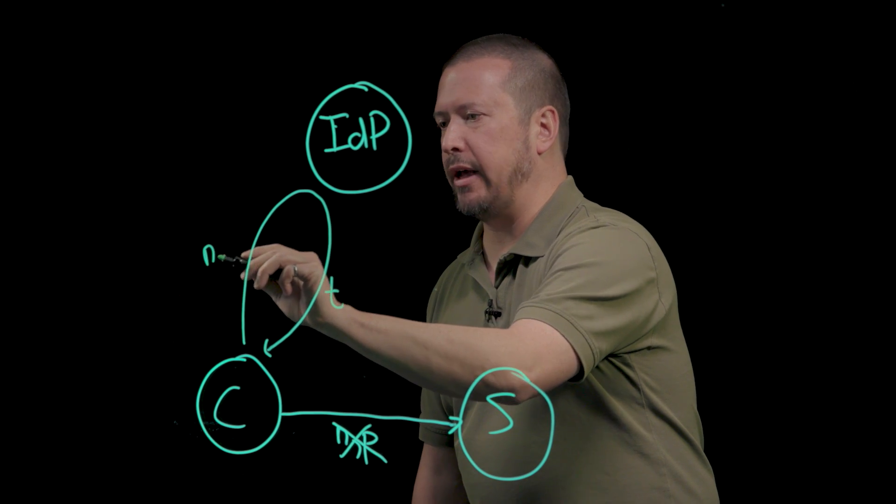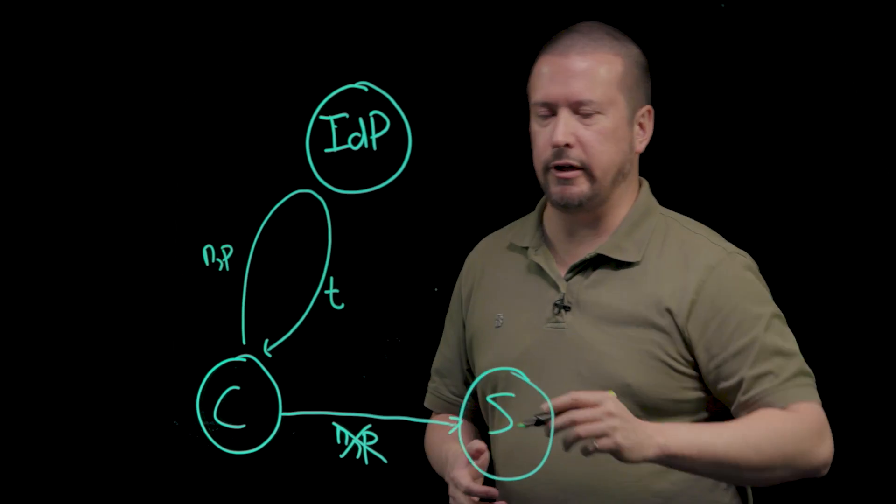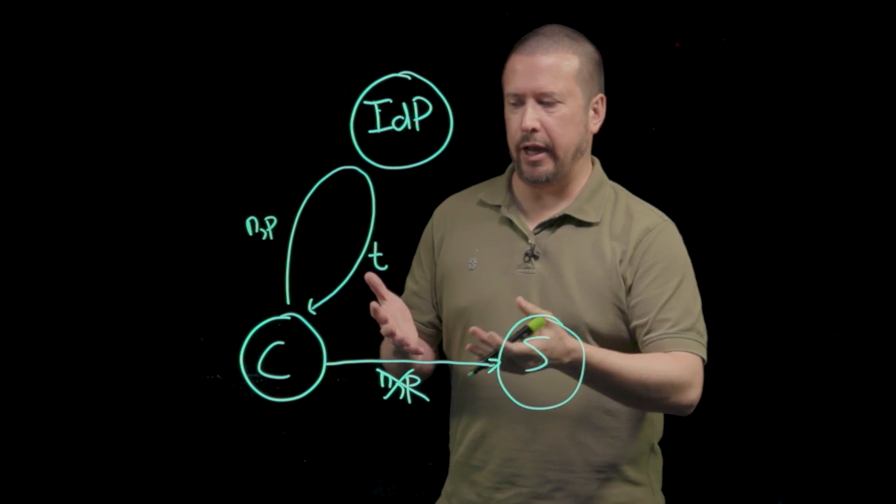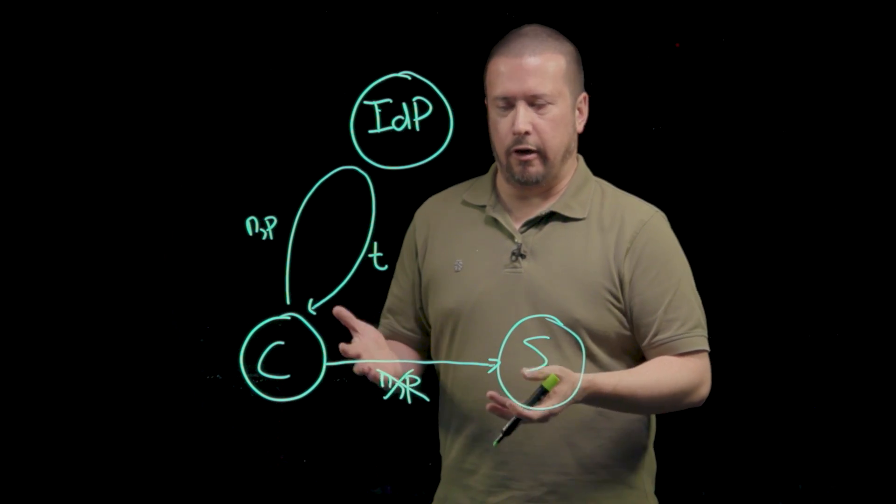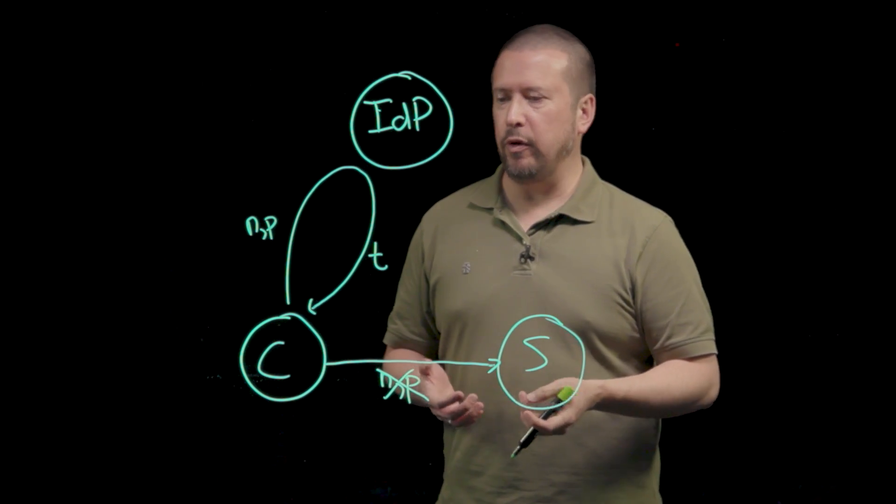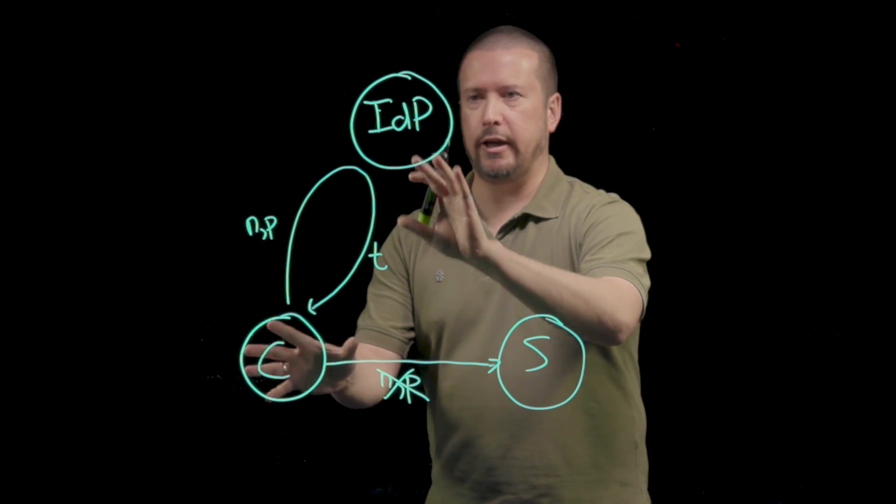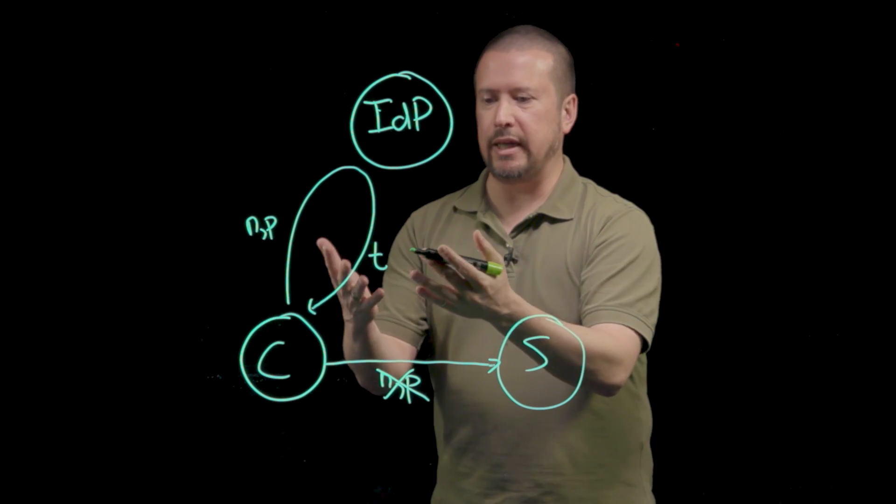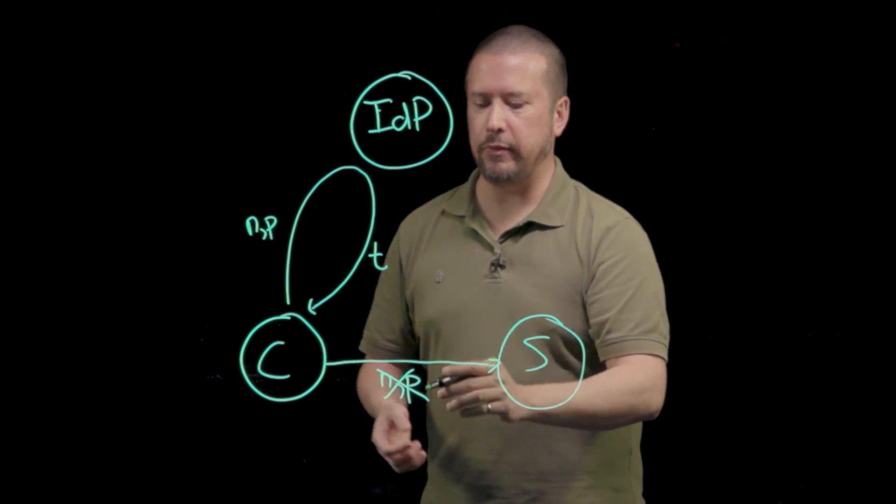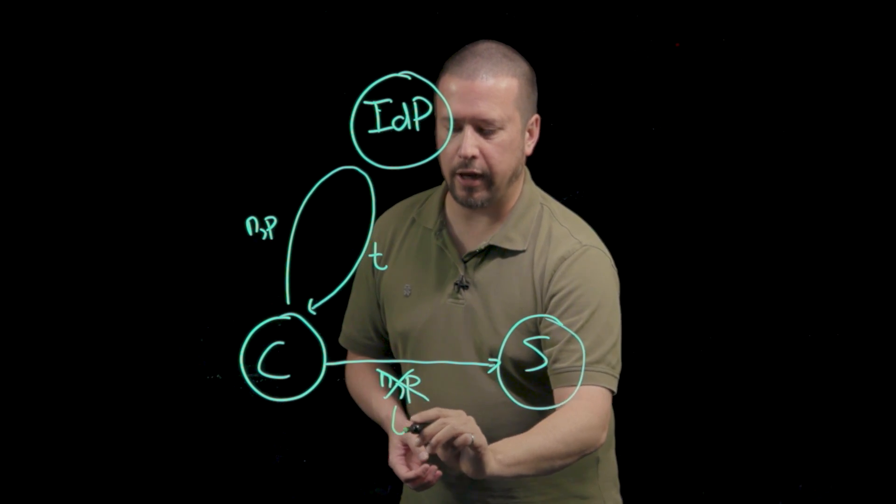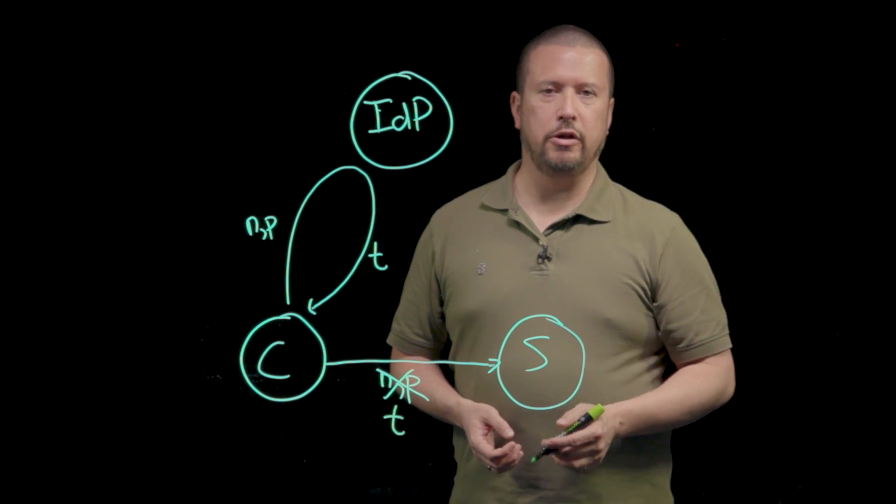And the way that it does that might be by, say, presenting a name and password to the identity provider. It might be by using a smart card. It might be by using an authenticator app on a phone. It doesn't matter. However, there is a contract between the client and the identity provider. We can get this thing called a security token from the identity provider. And then the client presents that security token to the server.